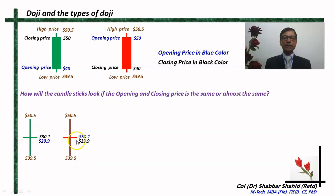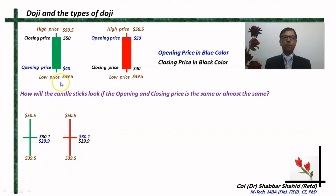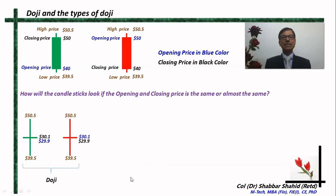Another scenario: the price opens at $30.1, goes all the way up to $50.5, then goes down to $39.5, and closes a shade lower at $29.9, making it a red candle. So whether the candle is green or red, when the price opens and closes at almost the same point with shadows extending equidistance above and below, this type of candle is called a doji.